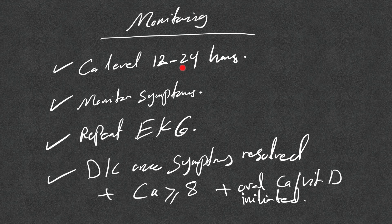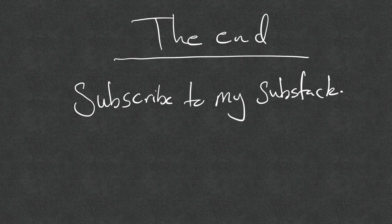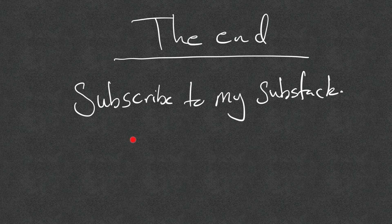For monitoring, recheck calcium level in 12 to 24 hours, monitor resolution of symptoms, and repeat EKG to confirm QTc has normalized. Discharge the patient once symptoms resolve, calcium is above 8 mg per deciliter, and adequate replenishment with oral calcium and vitamin D has been started. Subscribe to the Substack for a summary, like and share if useful, and subscribe to the channel.